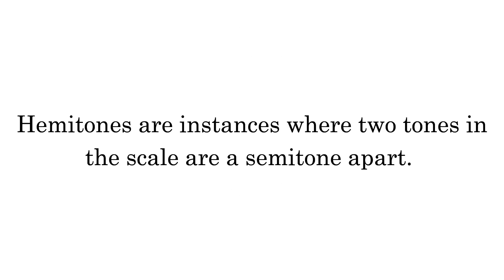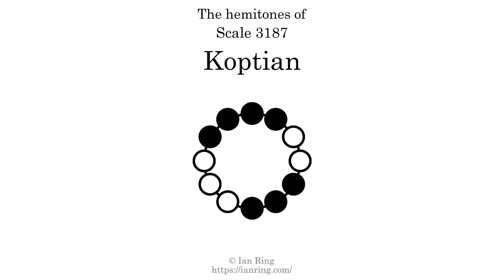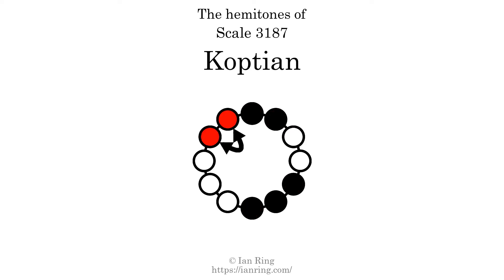Hemitones are instances where 2 tones in the scale are a semitone apart. This scale has 5 hemitones, they are at positions here, here, here, here, and here.